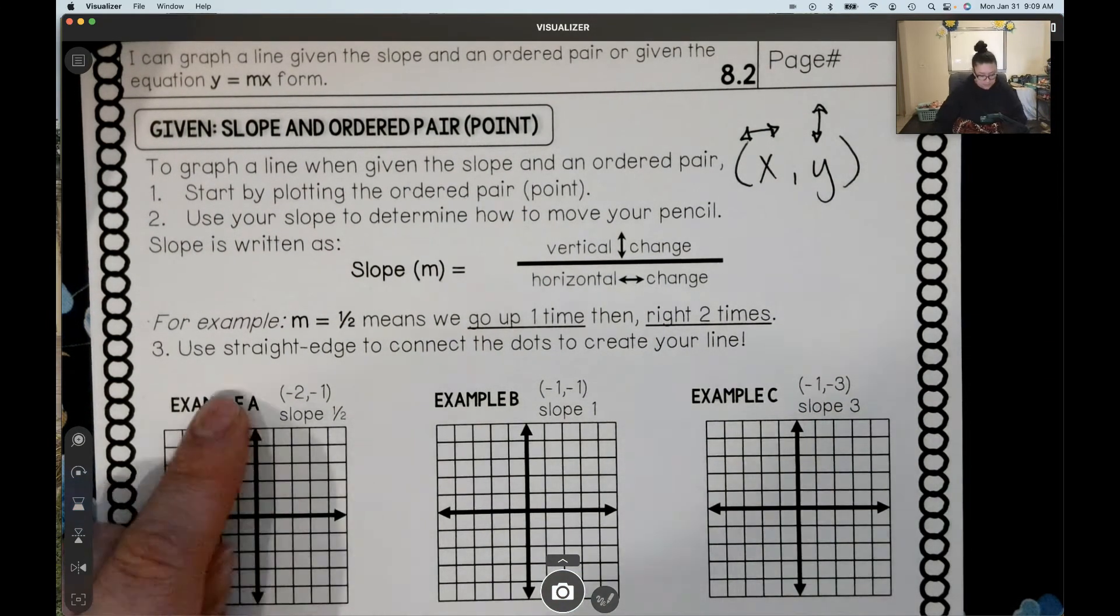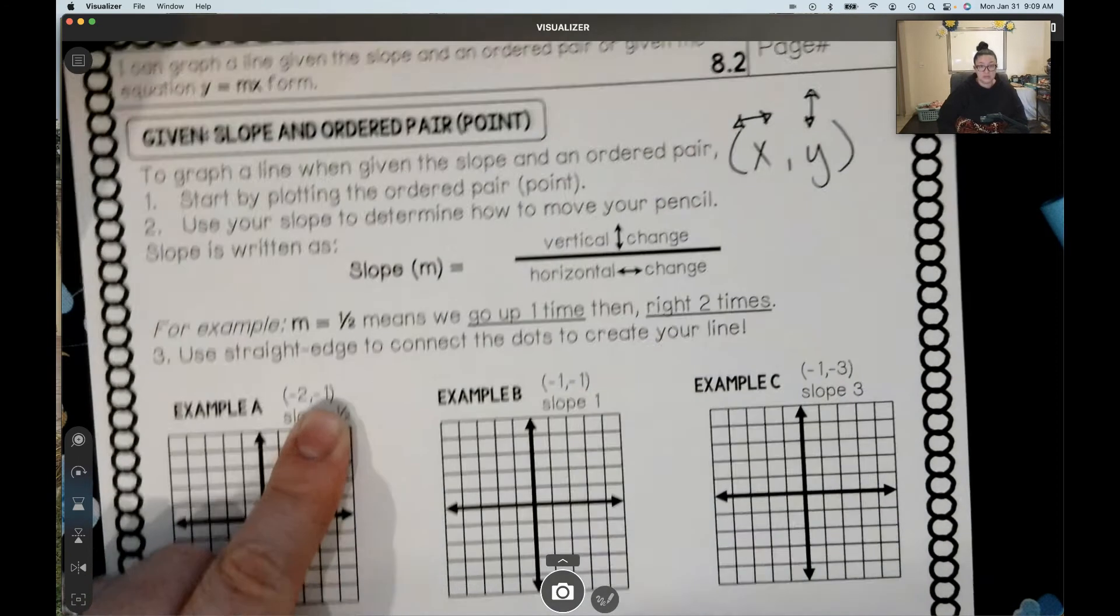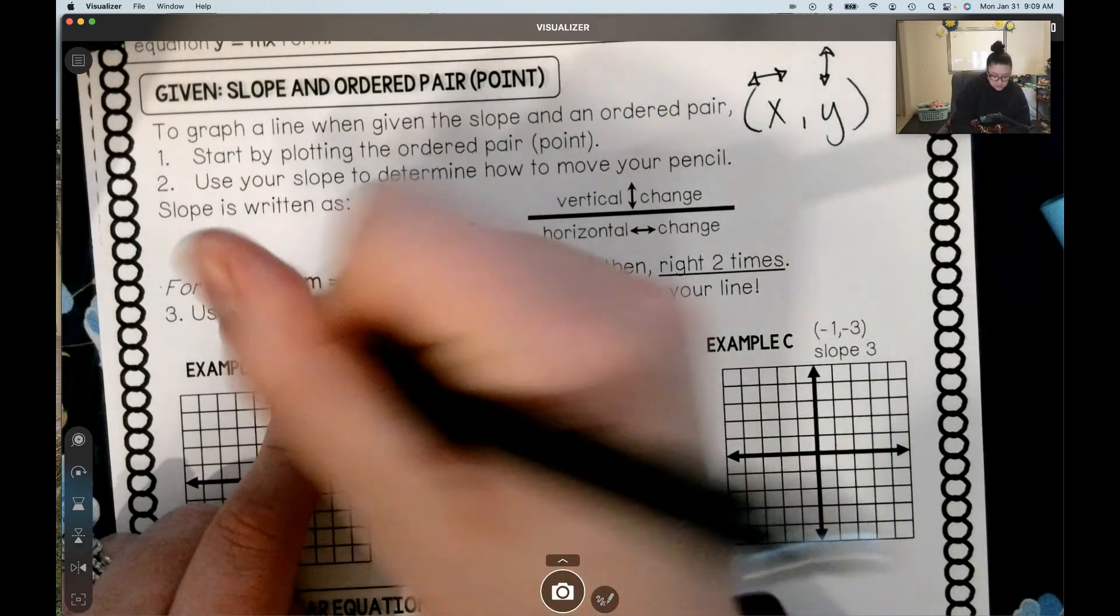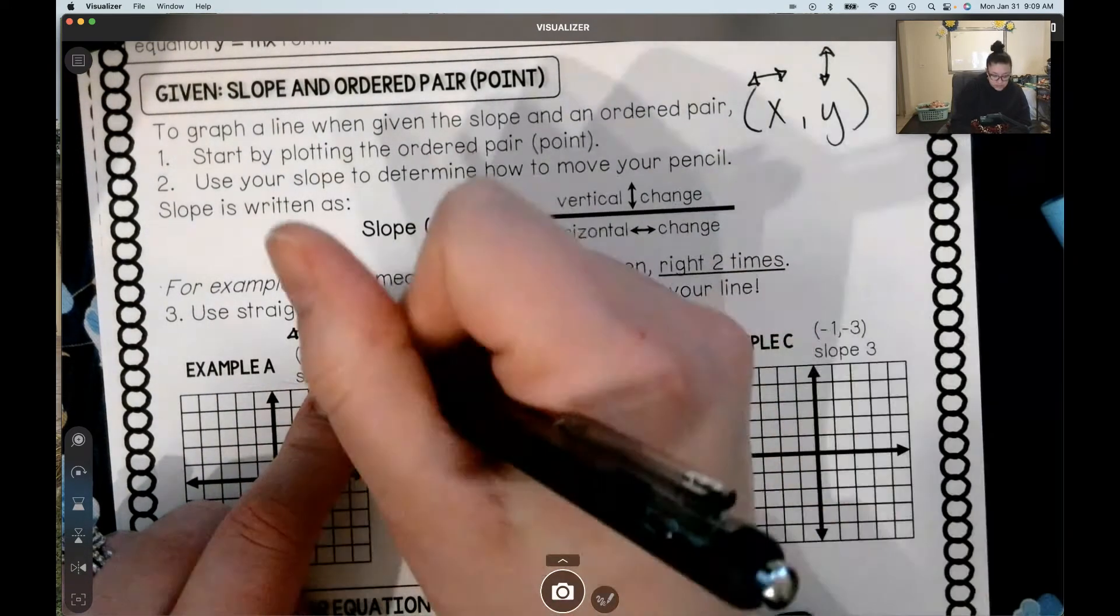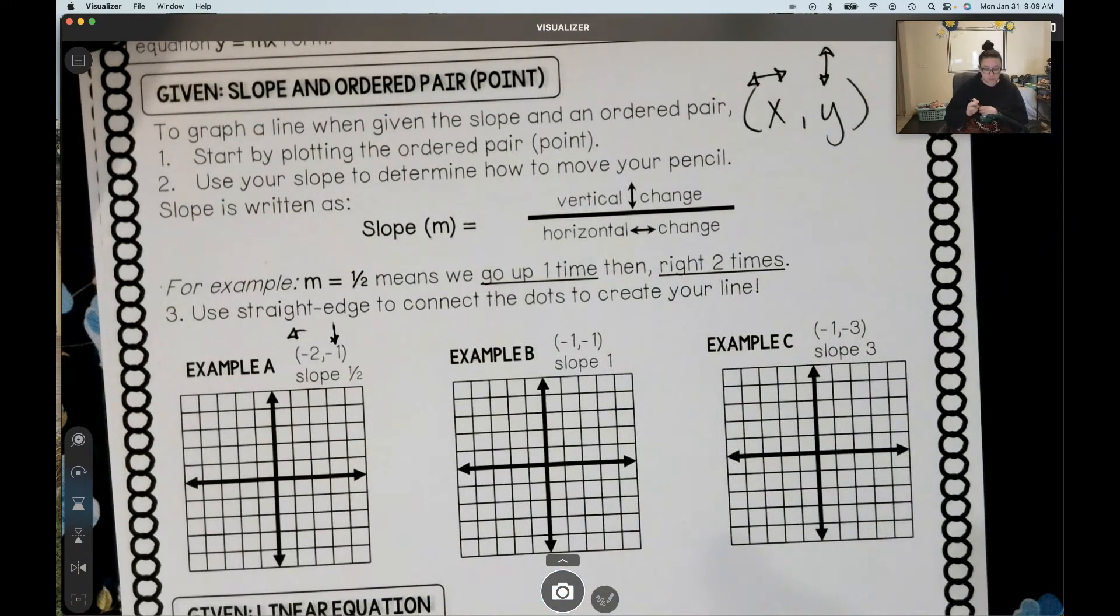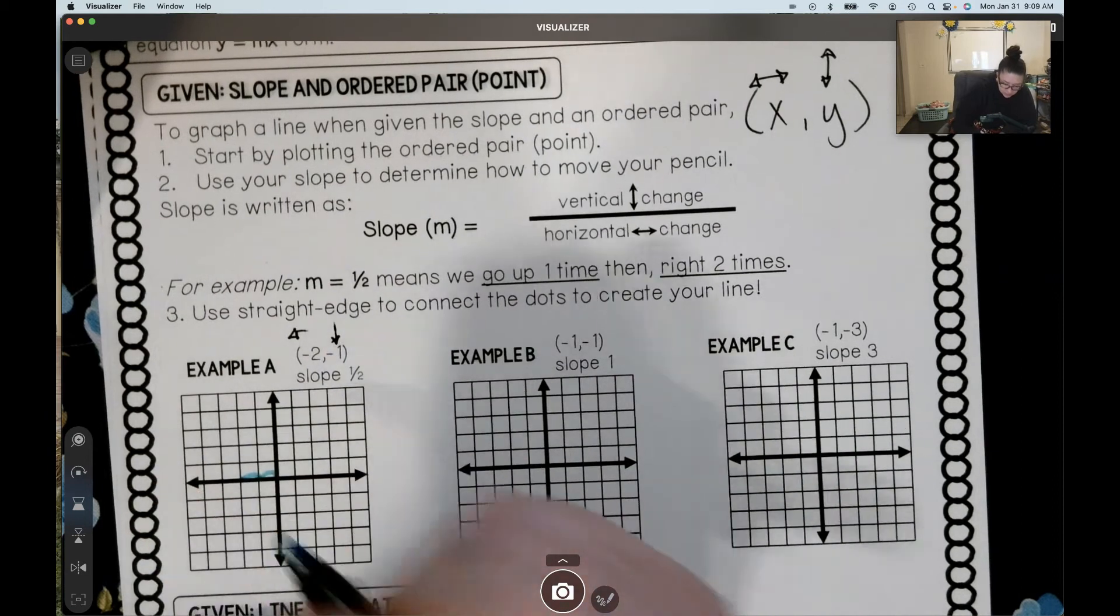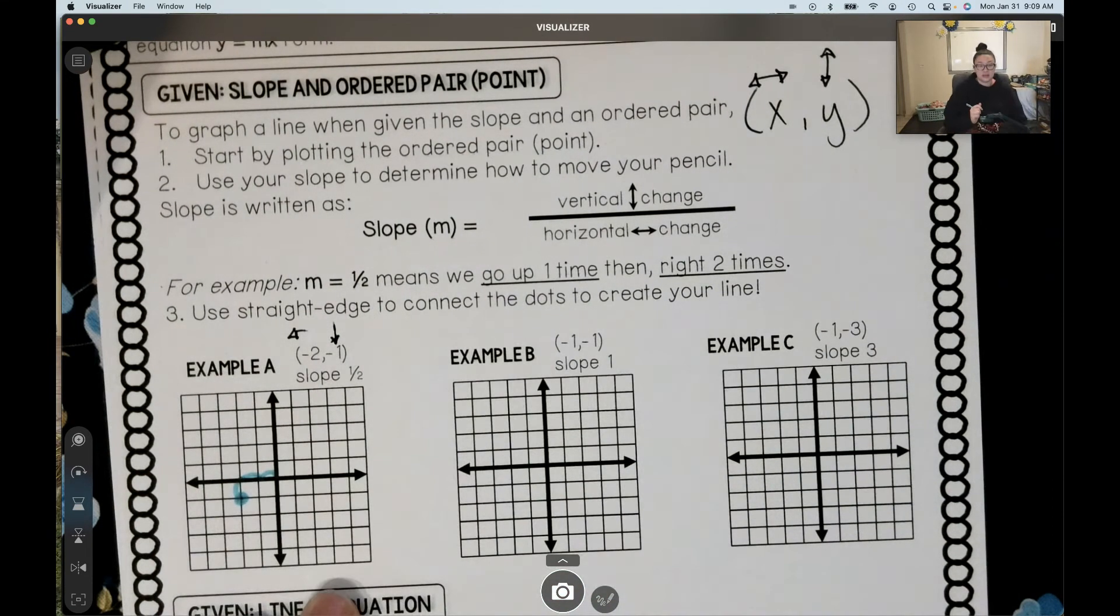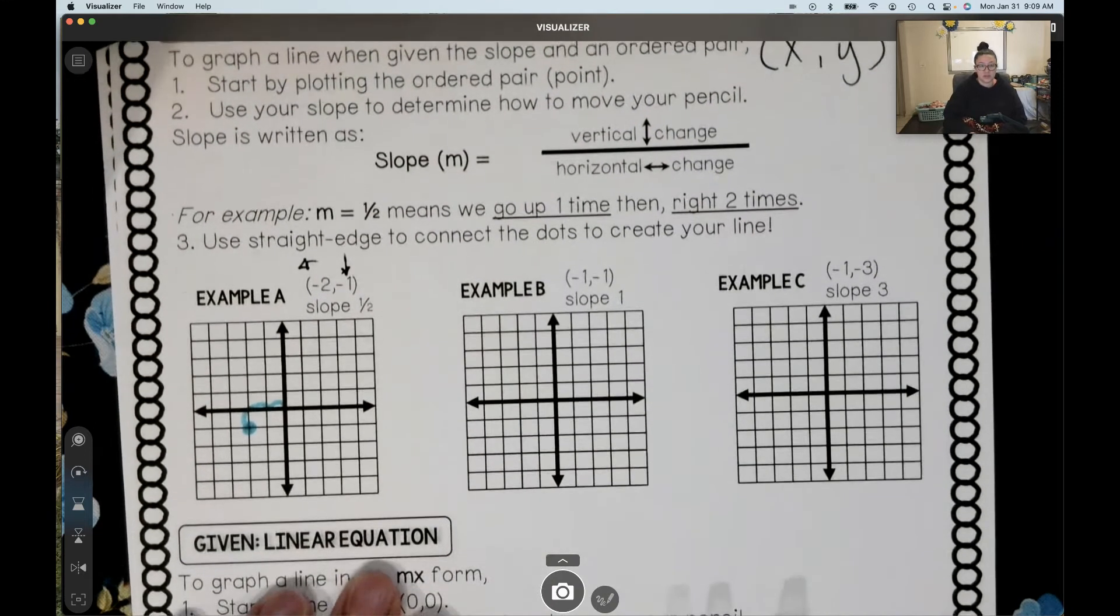So in our first example, we've got the point negative 2, negative 1. So that means I need to go to the left 2 because it's negative, and I need to go down 1 because it's negative. We always start at our origin. The origin is our starting point. So to the left 2, down 1 gives us our first point right there.